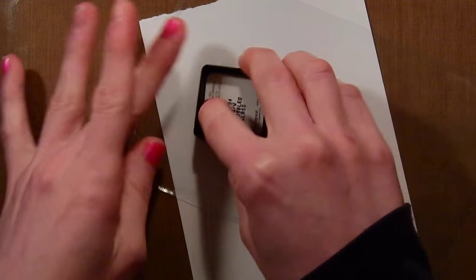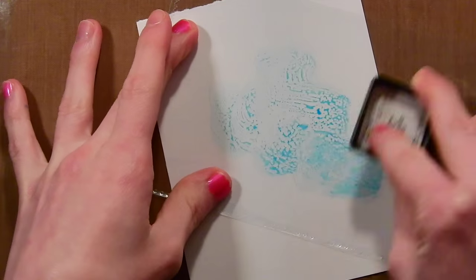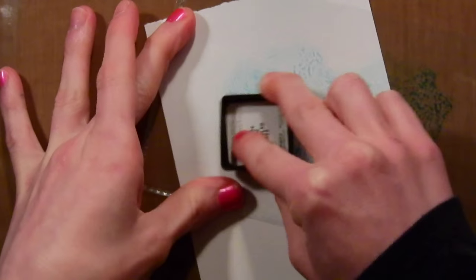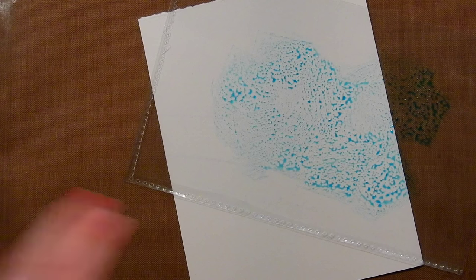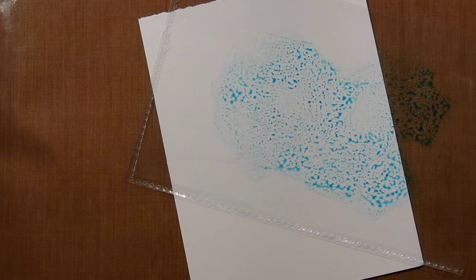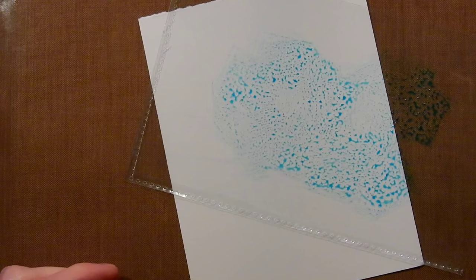So now I'm going to be creating some texture onto the background of this panel here. This is going to be the background of our shaker card. I'm going to be pressing this ink onto some acetate here. This is just actually a page protector acetate piece.